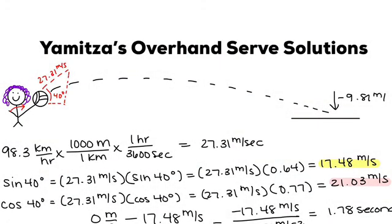Once again, we took the average speed of a serve and converted it to meters per second, which was 27.31. Then we multiplied it by the sine of 40 to get 17.48 meters per second. To get the cosine of 40 degrees, we multiplied it and got 21.03 meters per second.